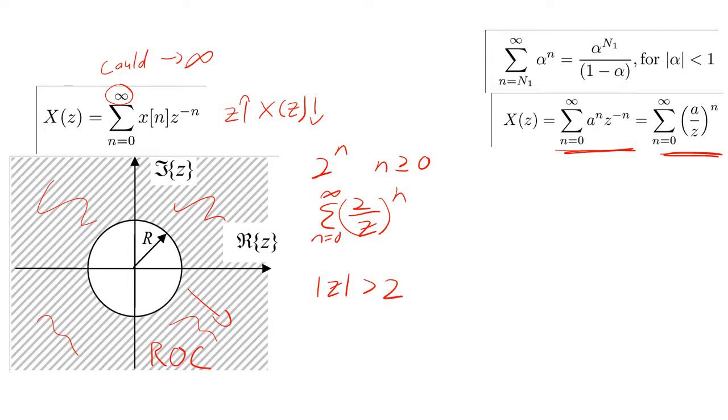This equation tells us that for exponents smaller than 1, the sequence will converge to a value. So, from this relationship, we plug in our values and find that the Z-transform of an exponential is compact and converges for a limited set of values.